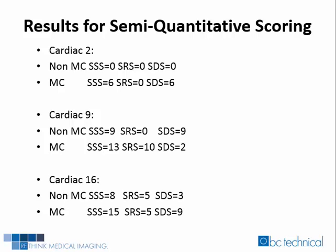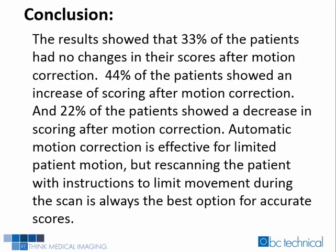After motion correction in all three examples, the semi-quantitative scoring went up from either normal to significantly abnormal or abnormal to grossly abnormal. Automatic motion correction increased the scores in all three patients. The results showed that 33% of the patients had no changes in their scores after automatic motion correction, 44% showed an increase in scoring, and 22% showed a decrease in scoring after automatic motion correction.